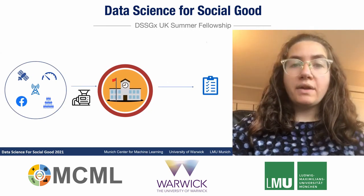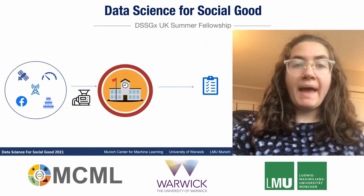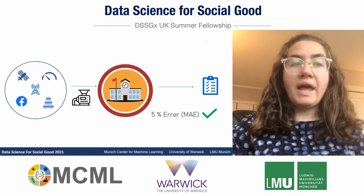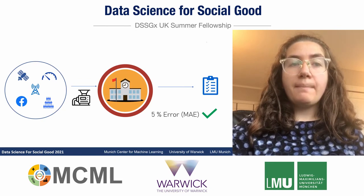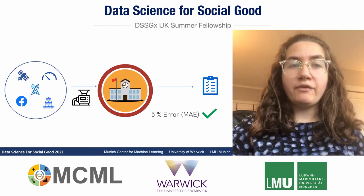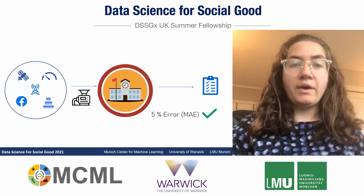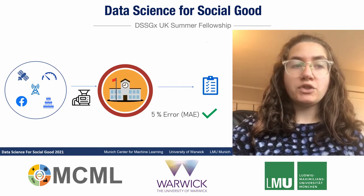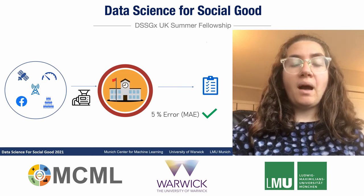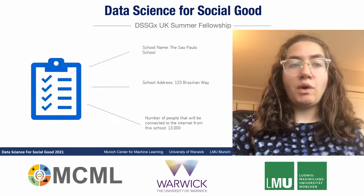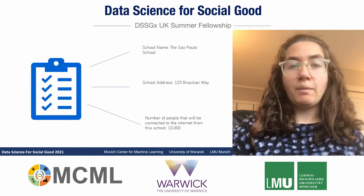We then trained a model that extracts patterns from the data. On average, our predictions are only 5% off base, provided here as the mean absolute error for easy interpretation. We are particularly proud of this 5% because it is attuned to minimize error for schools with lower internet connectivity. We can then confidently deliver a priority list to our partner.